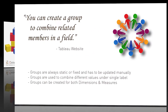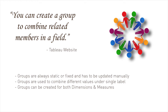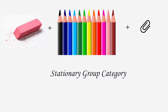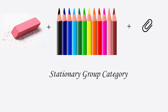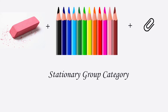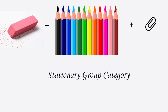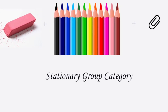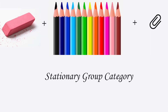So what is a group? As per Tableau's definition, you can create a group to combine related members in a single field. For example, if we are talking about a sales dataset where we have sales of different categories and subcategories — for example, sales of pencils, erasers, and paper clips — then all of these items can be grouped together to create a stationery category showing the sales of all these items clubbed together into one category.